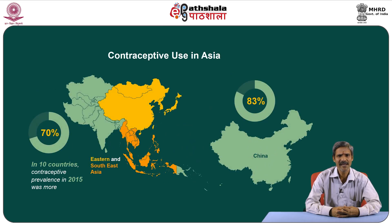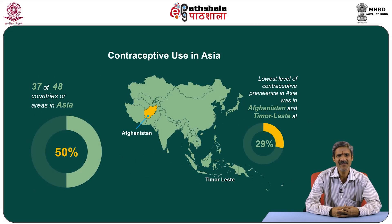Within Asia, the highest levels of contraceptive use were observed mainly in the Eastern and South Eastern regions, though other Asian regions also include some countries with high prevalence. In 10 countries, contraceptive prevalence was 70 percent or more, and China had a very high level. In 37 of the 48 countries in Asia with sufficient data, contraceptive prevalence was 50 percent or more. The lowest level of contraceptive prevalence in Asia was recorded in Afghanistan at about 29 percent.